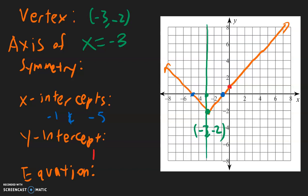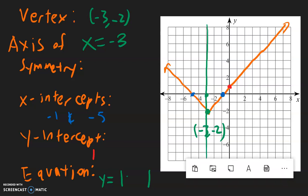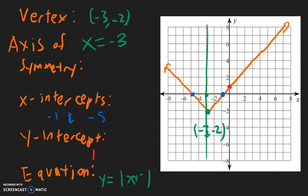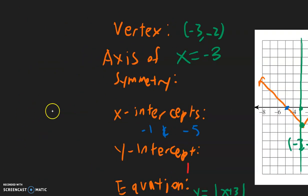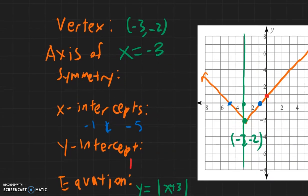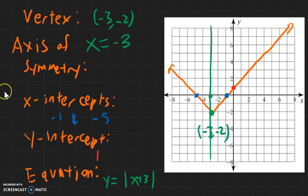Now for the equation, it's going to be y equals absolute value. We know this is absolute value because it looks like a V. Looking at the vertex, remember inside we change the sign, so the x-coordinate was negative 3, so we change it to positive 3. The other value is negative 2, and that stays the same on the outside.